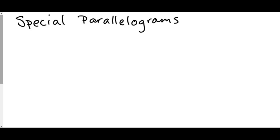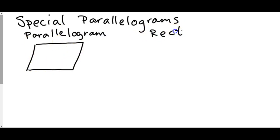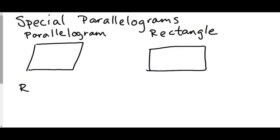Today we're going to talk about special parallelograms. A parallelogram is a four-sided shape, and there are actually a couple types. There's the classic parallelogram, the rectangle, the rhombus, and the square.